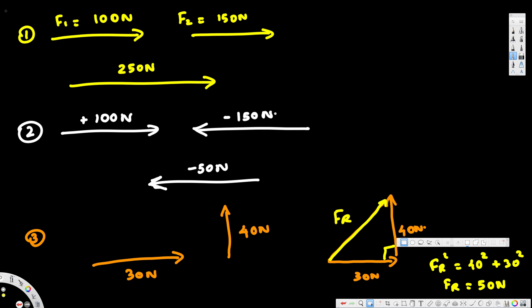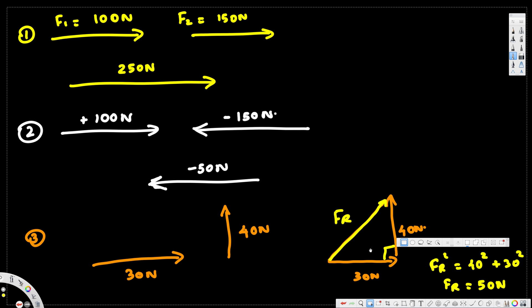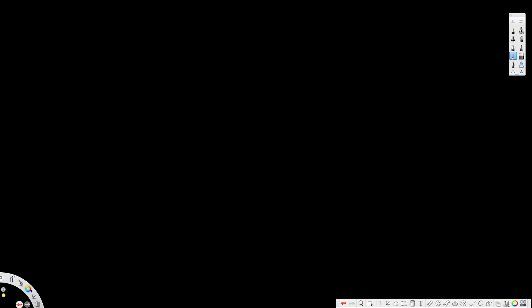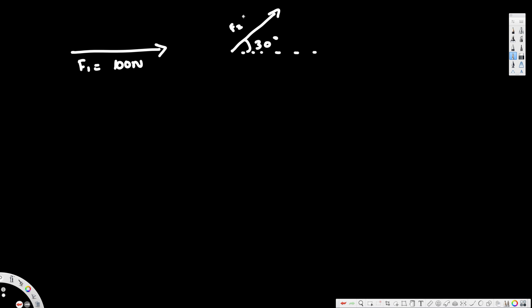Now let's see what happens when we don't have a perpendicular vector — when there's an angle. Say we have a horizontal vector of 100 newtons, call it F1, and another vector at 30 degrees with the horizontal, call it F2, with a value of 200 newtons. To find the resultant, we need to find all the x and y components and then add them. For F1, it's easy: F1x = 100 newtons and F1y = 0 because it's horizontal with no angle.